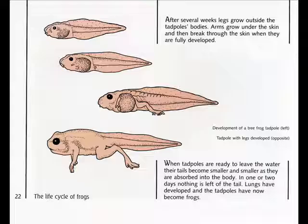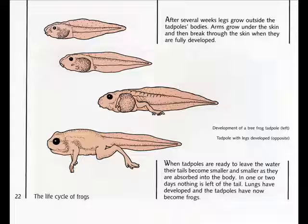After several weeks, legs grow outside the tadpoles' bodies. Arms grow under the skin and then break through the skin when they are fully developed. When tadpoles are ready to leave the water, their tails become smaller and smaller as they are absorbed into the body. In one or two days, nothing is left of the tail, lungs have developed, and the tadpoles have now become frogs.